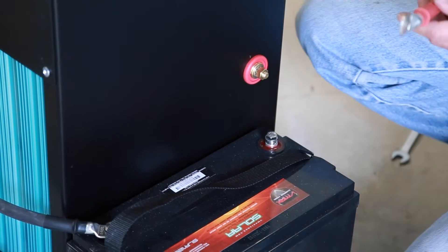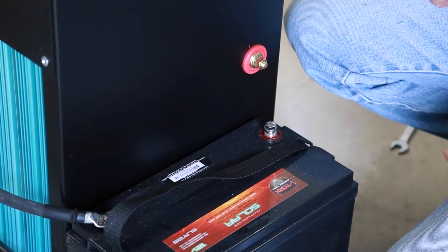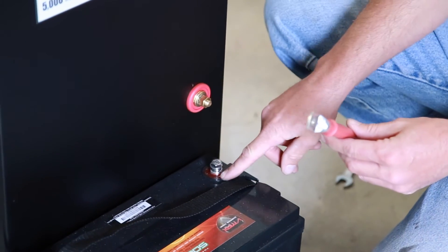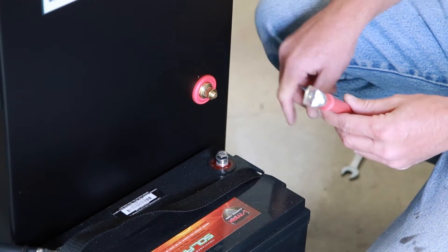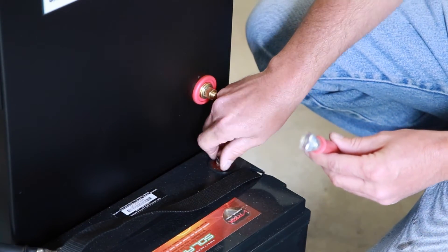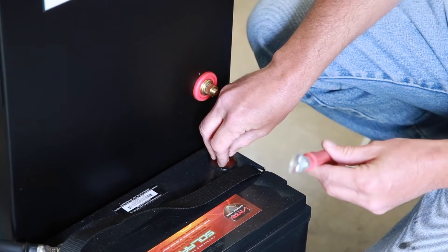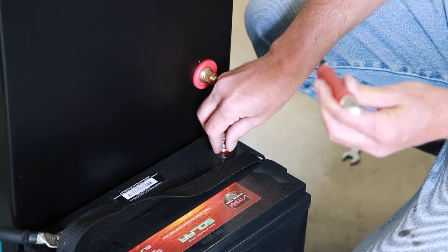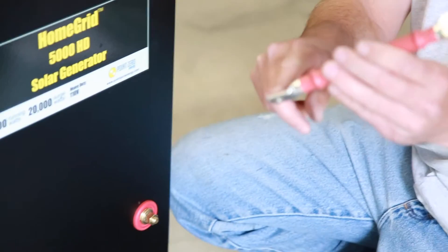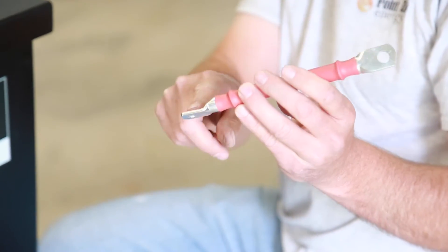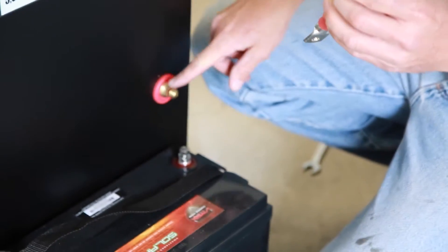Now the red cable will go on the side with the red battery terminal and the red generator terminal. These cables have one end with a small hole and one with a larger hole. The small hole will connect to the battery and the larger one will connect to the generator.